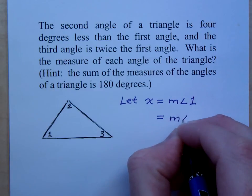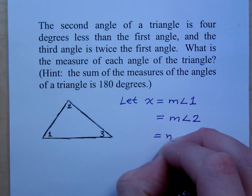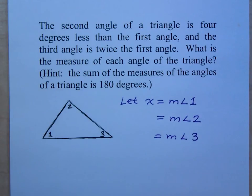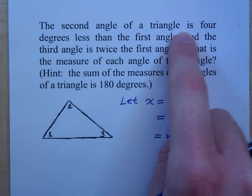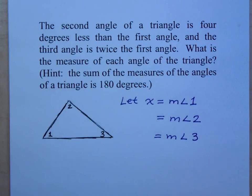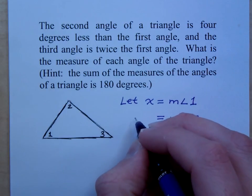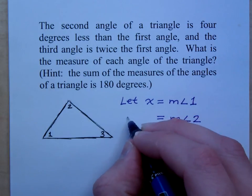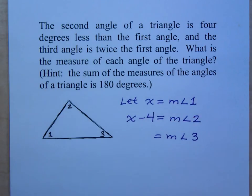Well, how then would I represent the measure of angle two and the measure of angle three? What does it say about the measure of angle two? It says the second angle is four degrees less than the first. How do you write four degrees less than the first? I'd have to say x minus four, right? Because whatever the first one is, if you subtract four from the first one, so x minus four, that gives you the second angle.